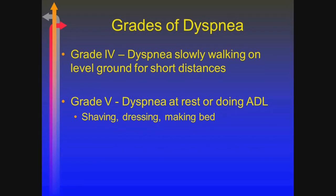Grade 5 is basically where they're dyspneic all the time — just sitting there like a bump on a log and they're short of breath. Or doing activities of daily living: shaving, cooking, bathing — they're short of breath. So if I give you a scenario, you should be able to distinguish which grade of dyspnea I'm talking about.